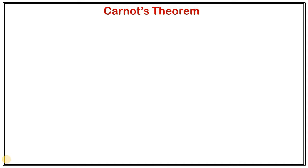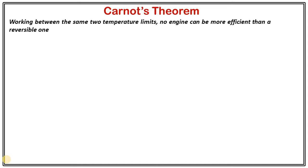What the Carnot theorem says: working between two same temperature limits, no engine can be more efficient than a reversible one. This means that if you try to construct an engine, the reversible one will be more efficient. So how can we prove this Carnot theorem?